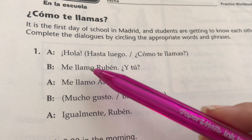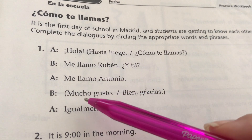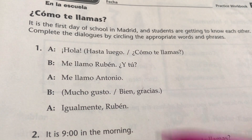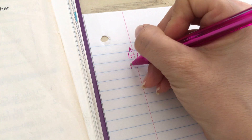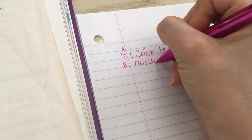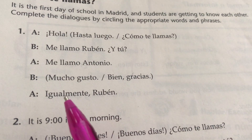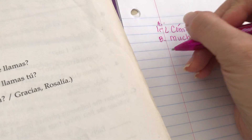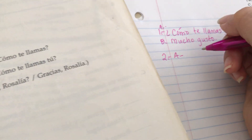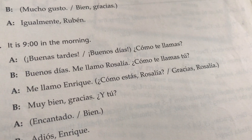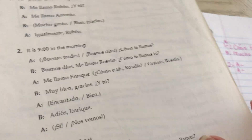The other person answers: me llamo Rubén. ¿Y tú? — My name is Rubén. And you? Then person A says me llamo Antonio. Then person B says mucho gusto o bien gracias — so which one fits? It would be mucho gusto. Then: igualmente Rubén. Then you would start with number two, write your answer, and that's how you would fill those in.